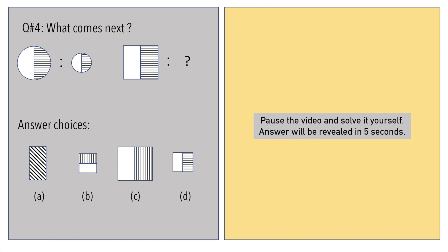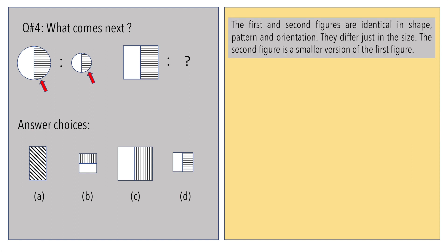What comes next? Pause the video if you'd like. The first and second figures are identical in shape, pattern and orientation. They differ just in size. The second figure is a smaller version of the first figure.